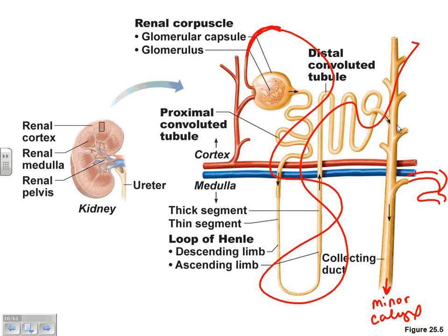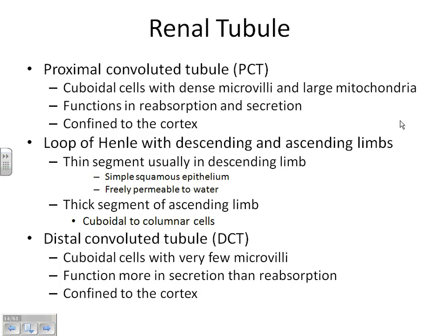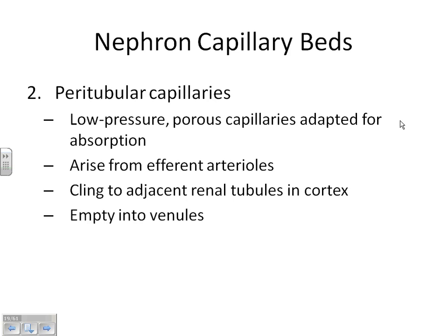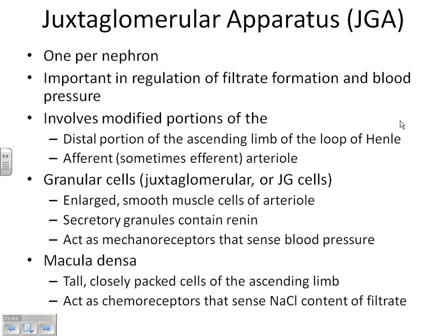We have this juxtaglomerular apparatus. Where does it sit? Close to the glomerulus and the distal convoluted tubule. It's constantly comparing what the blood looks like at the afferent arteriole and the glomerulus to what the filtrate looks like as you're about ready to get rid of that filtrate — so it's always monitoring. One of our hormones that controls how much urine and what the urine looks like is activated by renin, which is secreted from the juxtaglomerular apparatus.